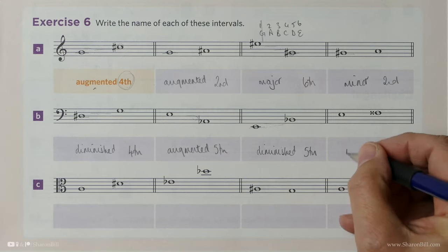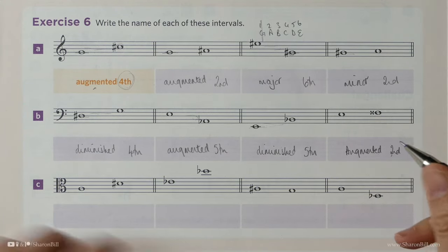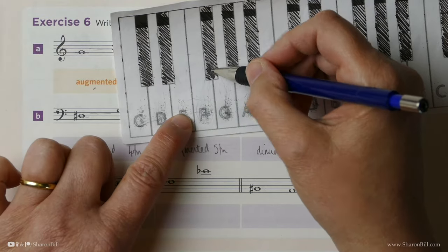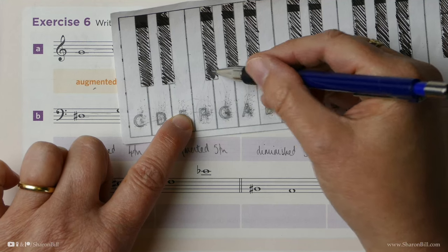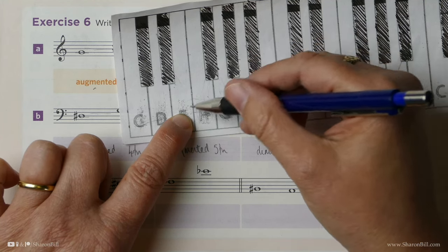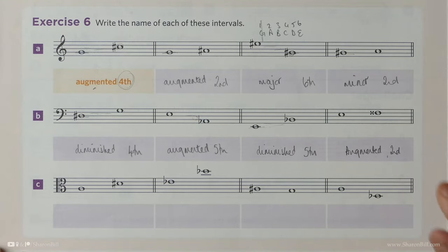Which is not at all the same as a minor 3rd, which is G flat. Remember, it's a different interval because it's representing the F note, regardless of the number of semitones that you've counted.